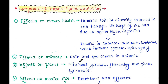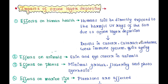Now we will see the impacts of ozone layer depletion. First, effects on human health. Humans will be directly exposed to the harmful UV rays of the sun due to ozone layer depletion, and this condition results in cancer, cataracts, sunburns, weak immune system, premature aging, etc.